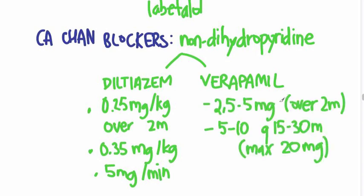And if you want to use verapamil, here are the doses: 2.5 to 5 milligrams given over 2 minutes, and then your next dose could be 5 to 10 milligrams given every 15 to 30 minutes, but you max out at 20 milligrams.